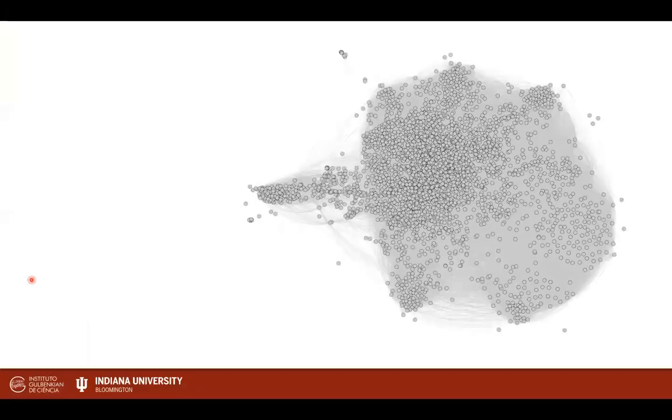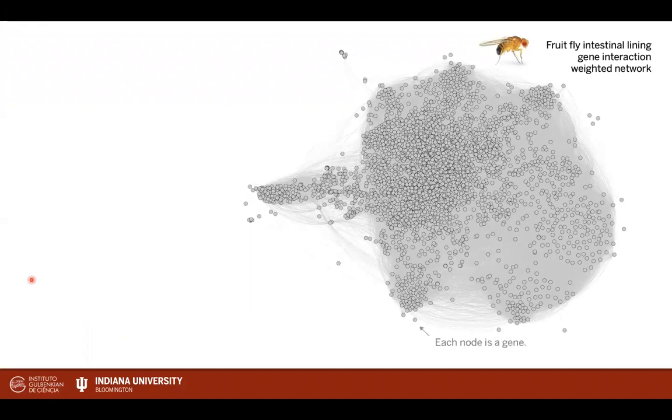So let me start with a very practical example. This is the Drosophila intestinal lining gene interaction network. Every node in this network is a gene, and every connection between two nodes is a known interaction between two genes. This is a weighted network.